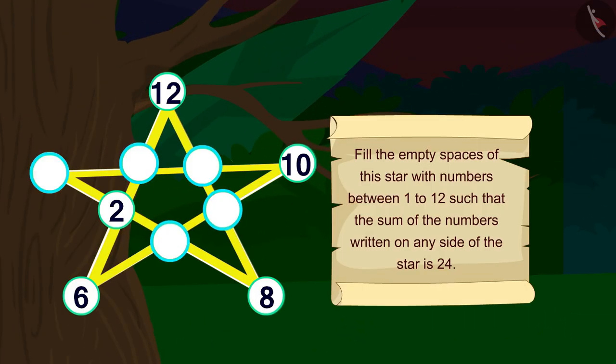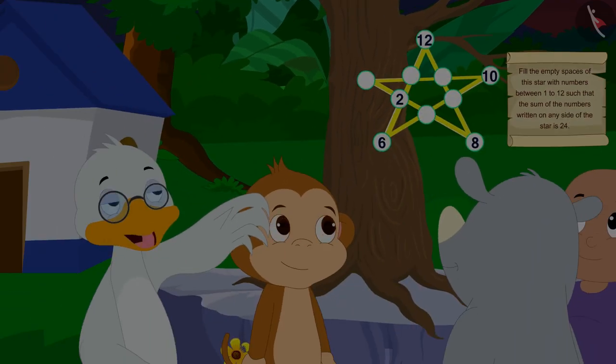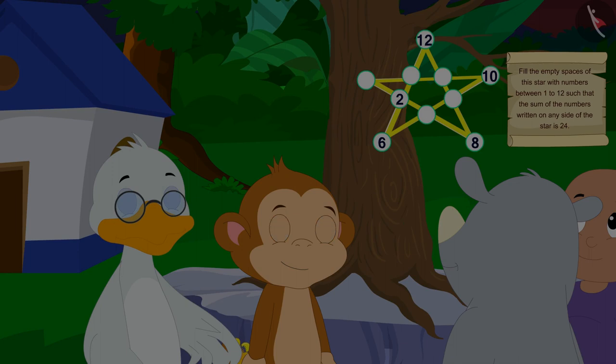Fill the empty spaces of this star with numbers between 1 to 12 such that the sum of the numbers written on any side of the star is 24. Let's all try to fill these empty spaces together, Uncle told all the villagers.